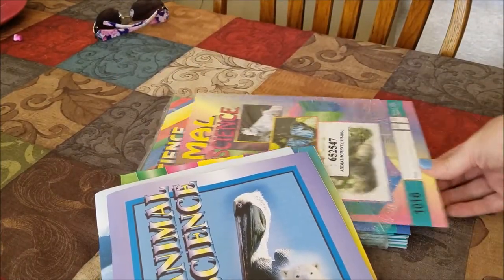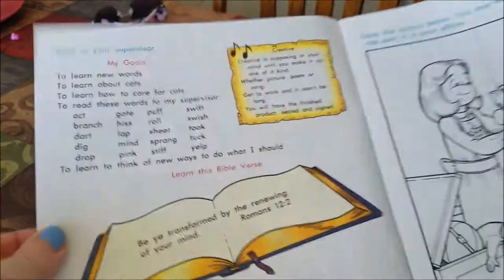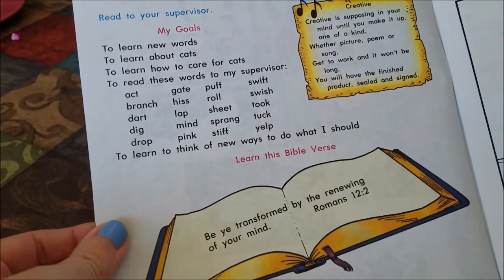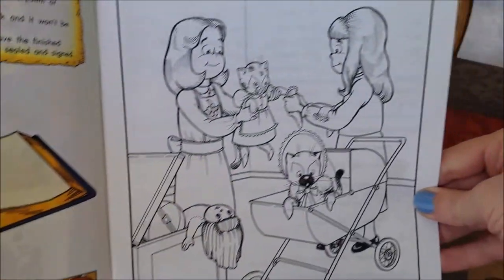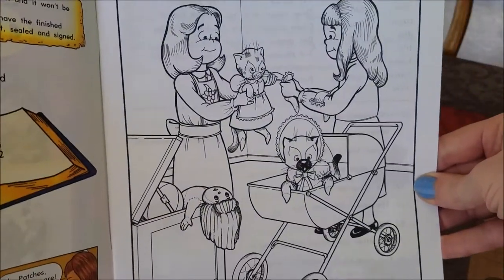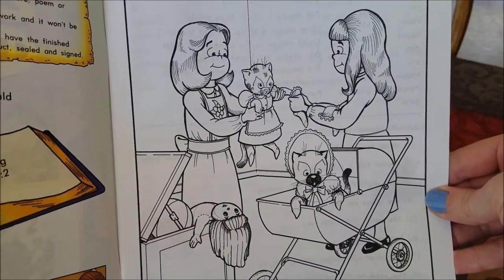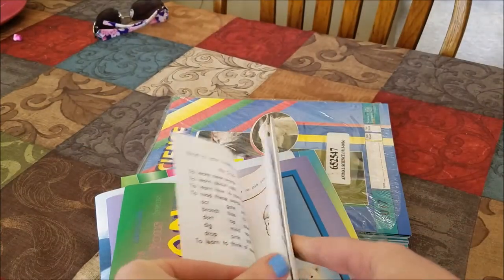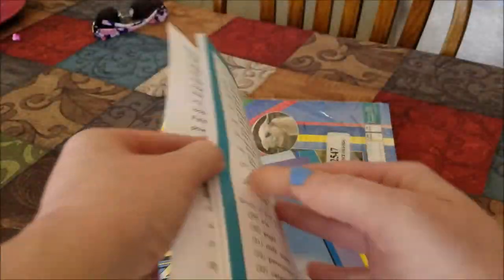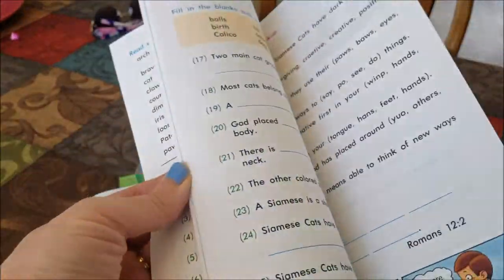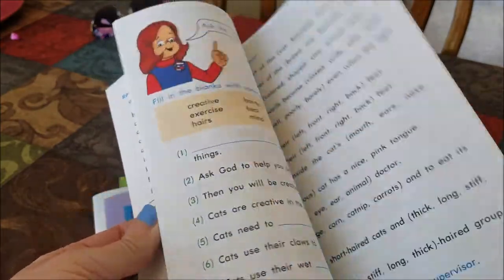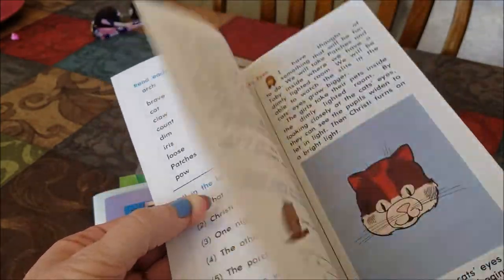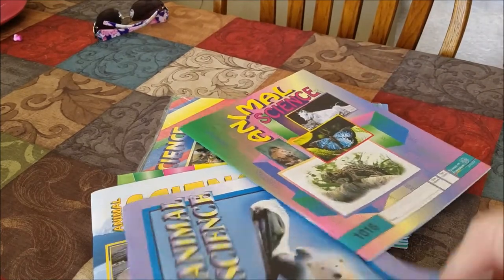The last one I'll show you — number 16 — is about cats. You do have these coloring pages every once in a while, and then there are more vocabulary words. I'm really excited for her to learn more specific things about animals in all of these paces.